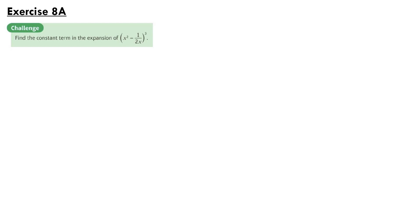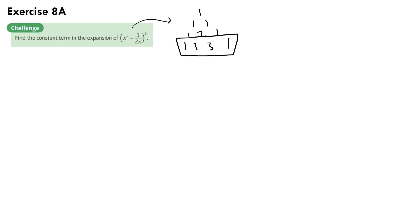So, if we think about our coefficients of the terms in this expansion, we'll have 1, 1, 1, 2, 1 and 1, 3, 3, 1 using Pascal's triangle. And this is the row we're looking for.